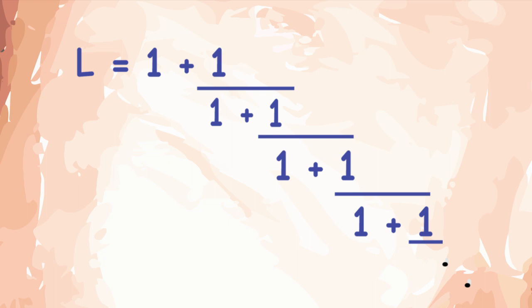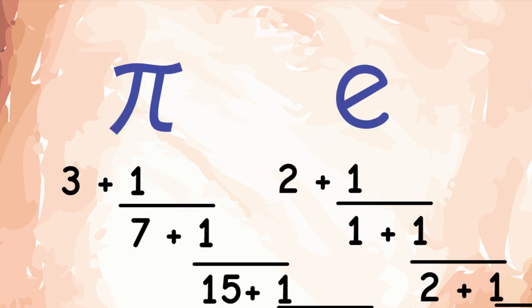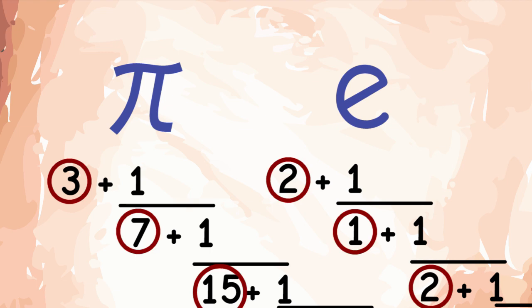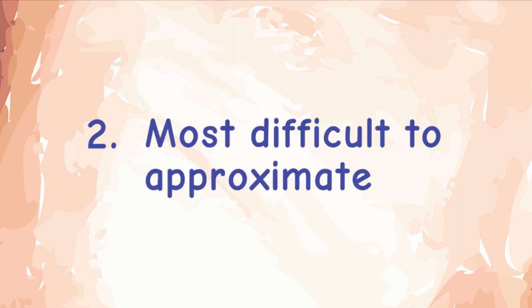You may have noticed that the Continued Fraction expansion for the golden ratio has ones everywhere, while those of other irrational numbers have other numbers as well. This will help us understand point number 2. The golden ratio is an irrational number that is the most difficult to approximate by a rational number.